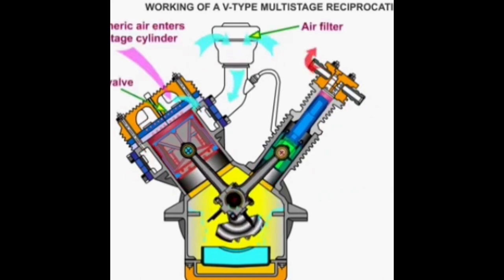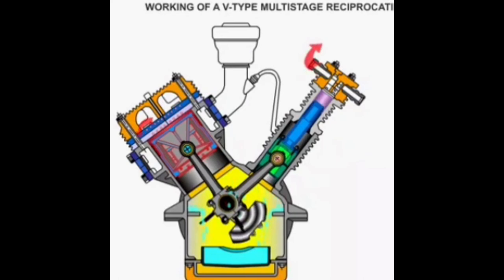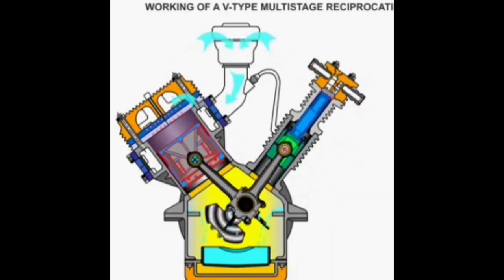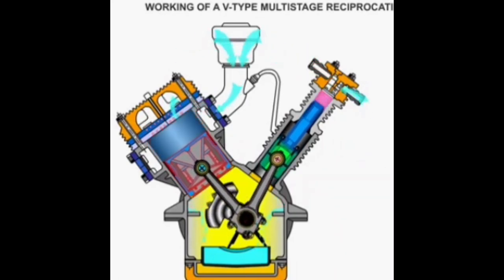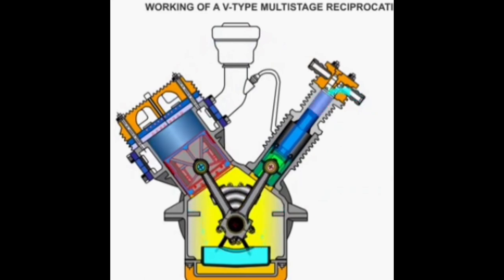This is the process. This one is the V-type model air compressor, and this is generally used in the heavy type compressor for filling.